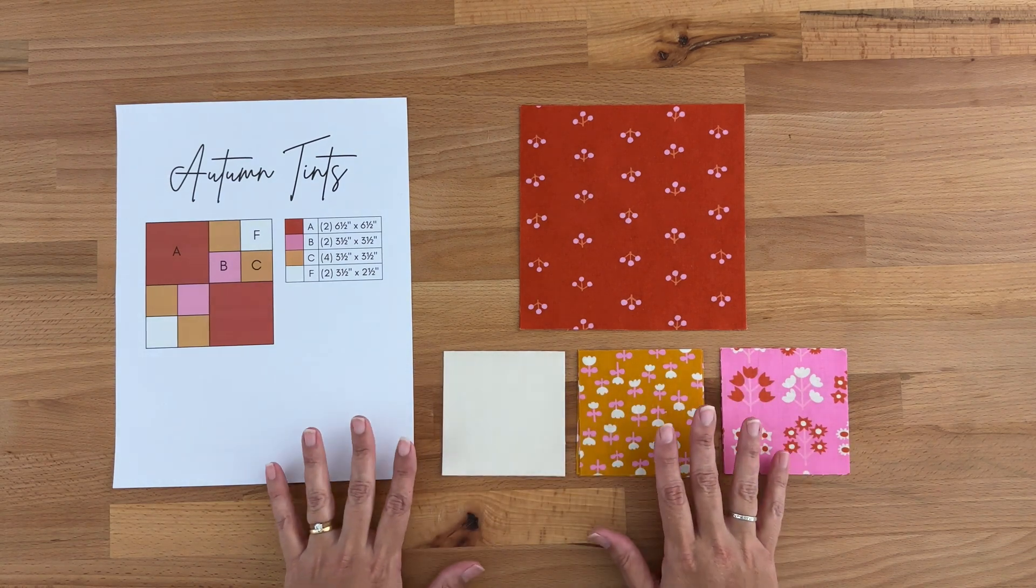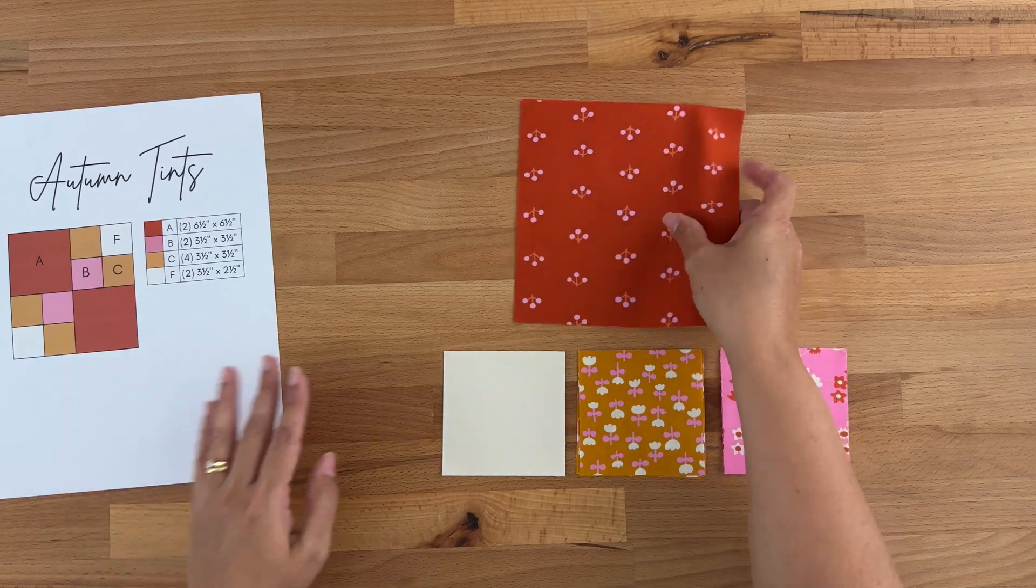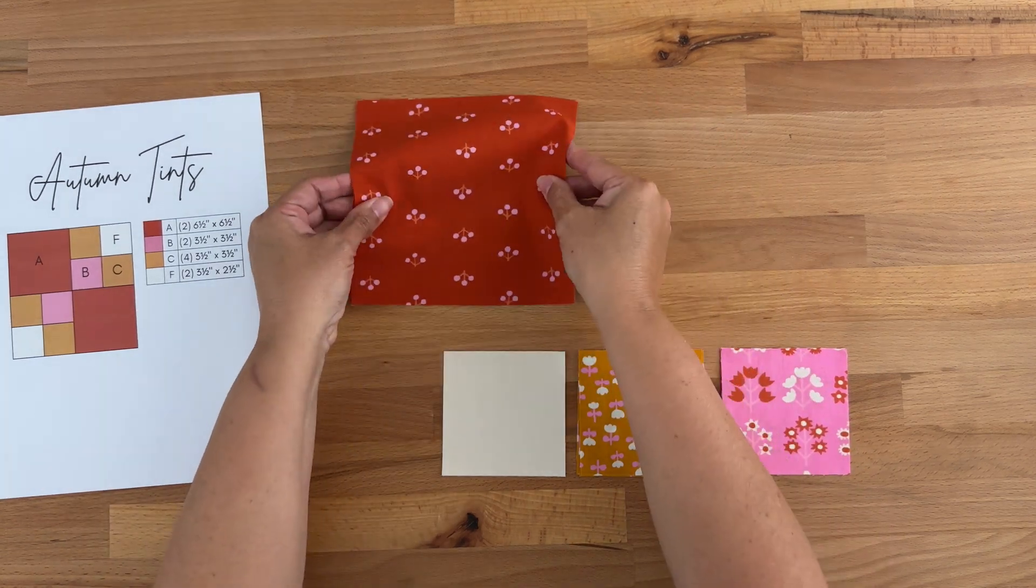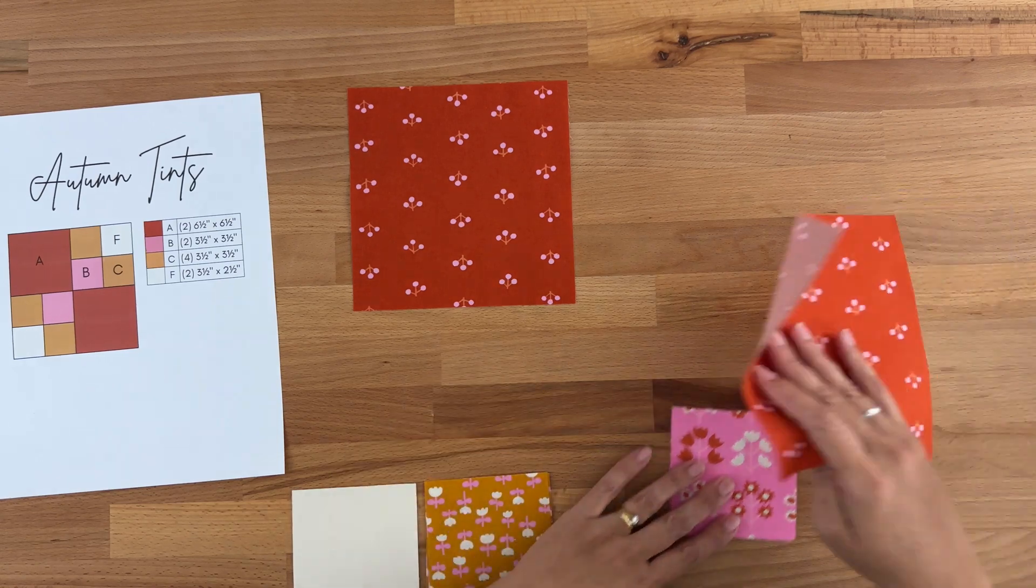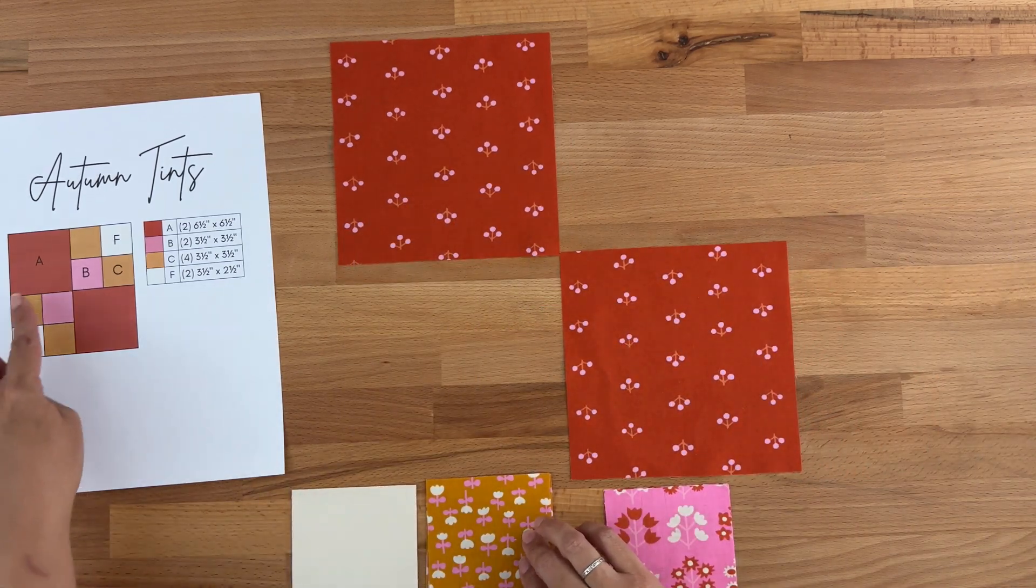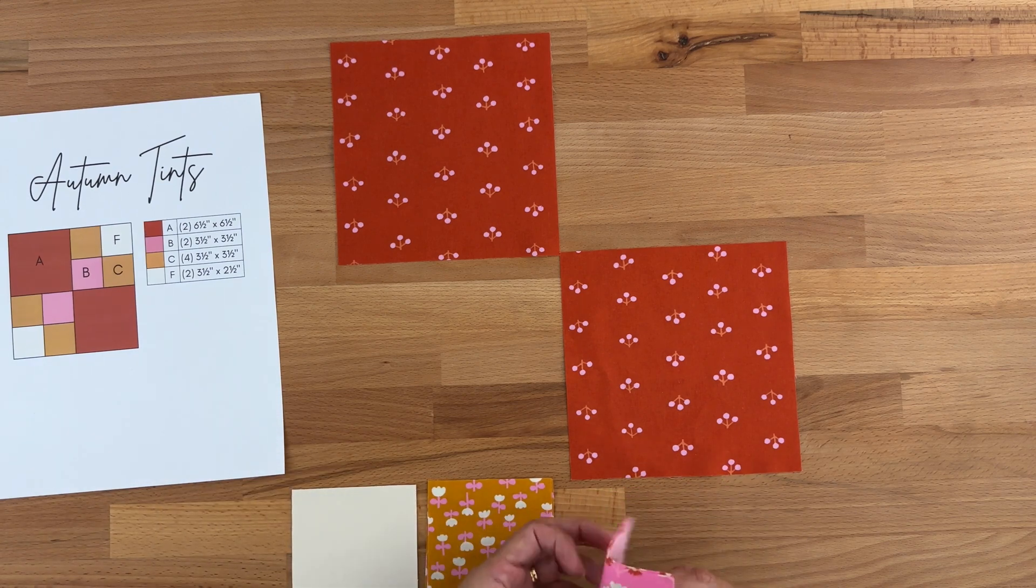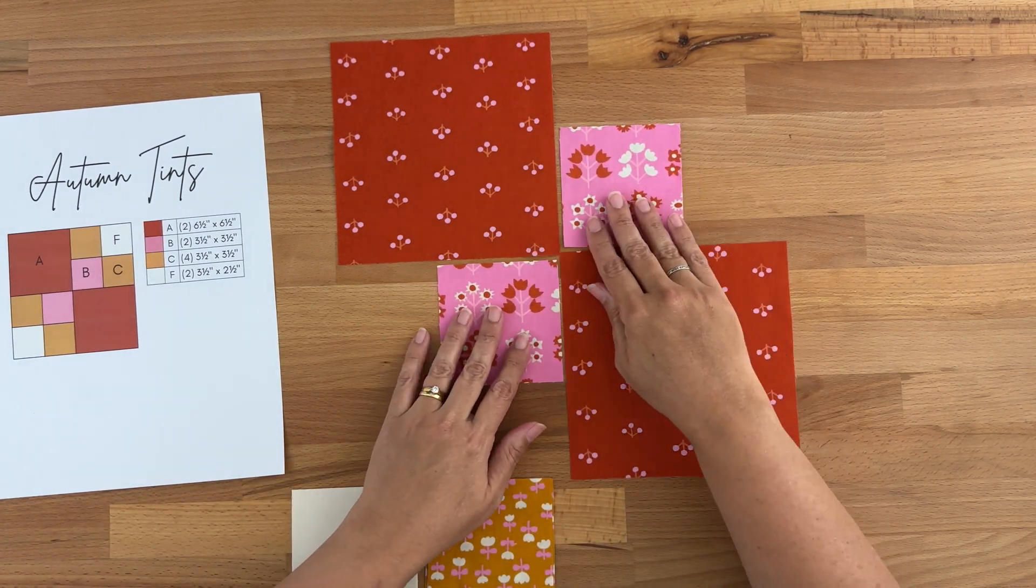Now what we're going to do is lay out our block so they match our image here. I'm going to take my A pieces and put one at the top left and one at the bottom right, and then match up my pieces so it matches the image. My B pieces are going in the center there, my C pieces are on either side.